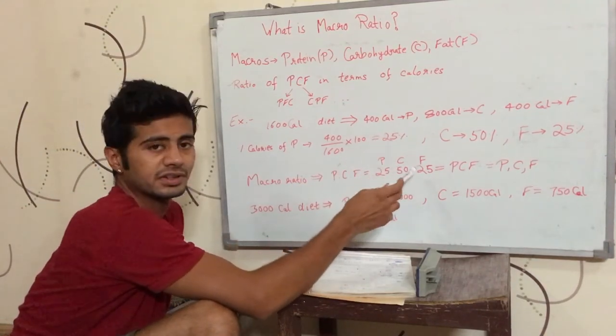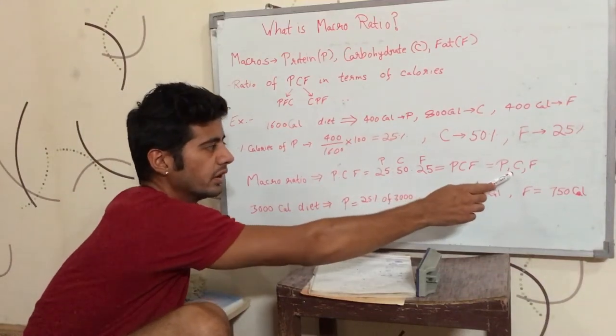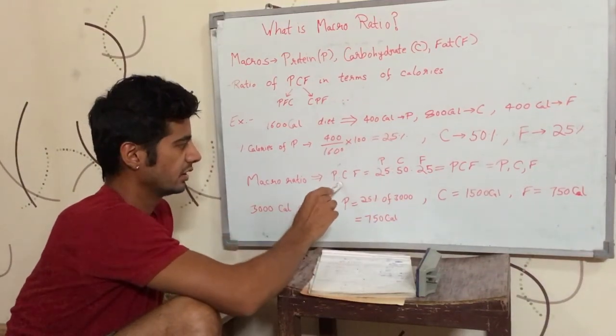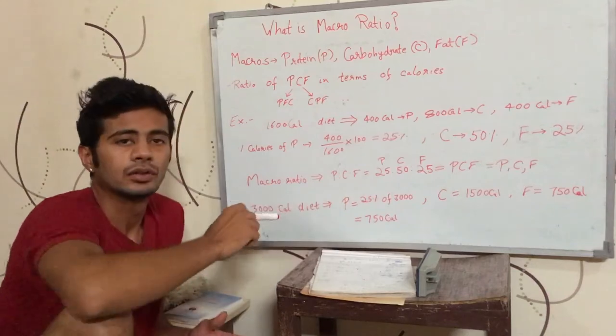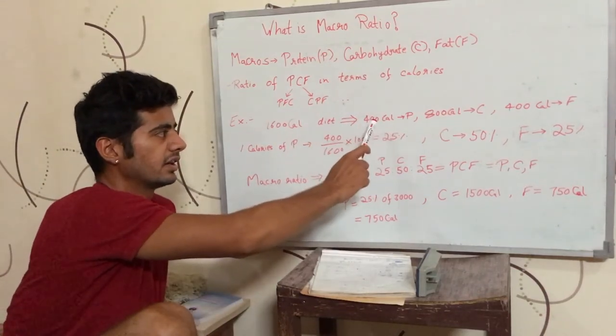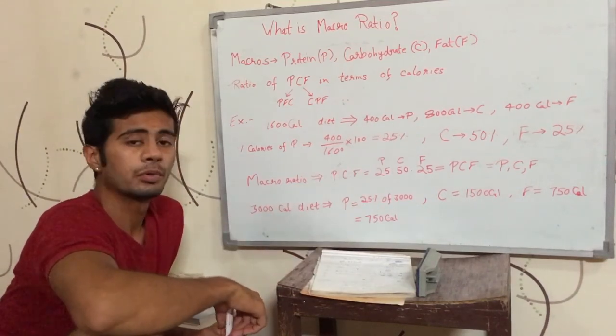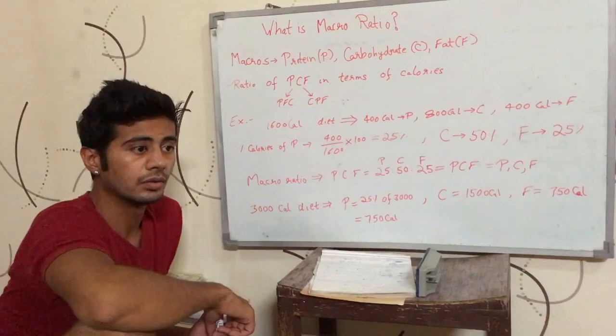It is 25-50-25% of protein, carbs, and fat. If you look at the ratio and anyone wants to know in values, you can calculate the ratio. So if anyone thinks that in this diet, the percentage of protein and carbohydrates are so much, you can express it as significant calories. There is a macro ratio.